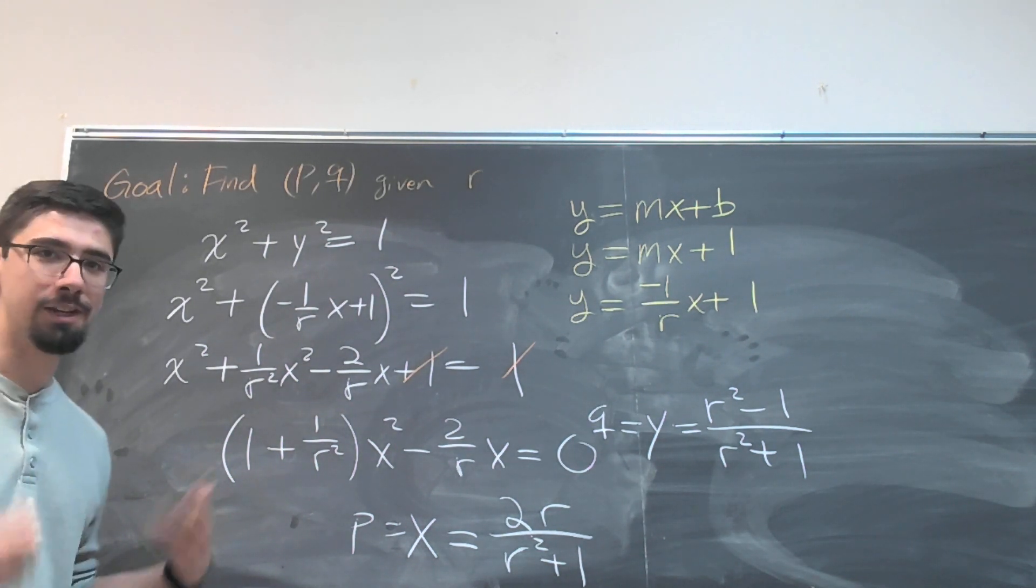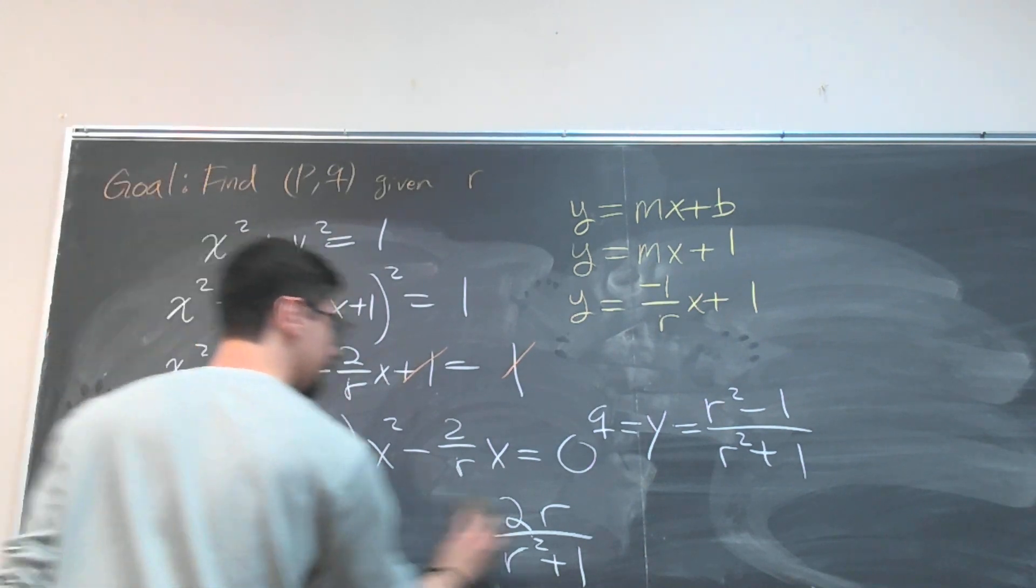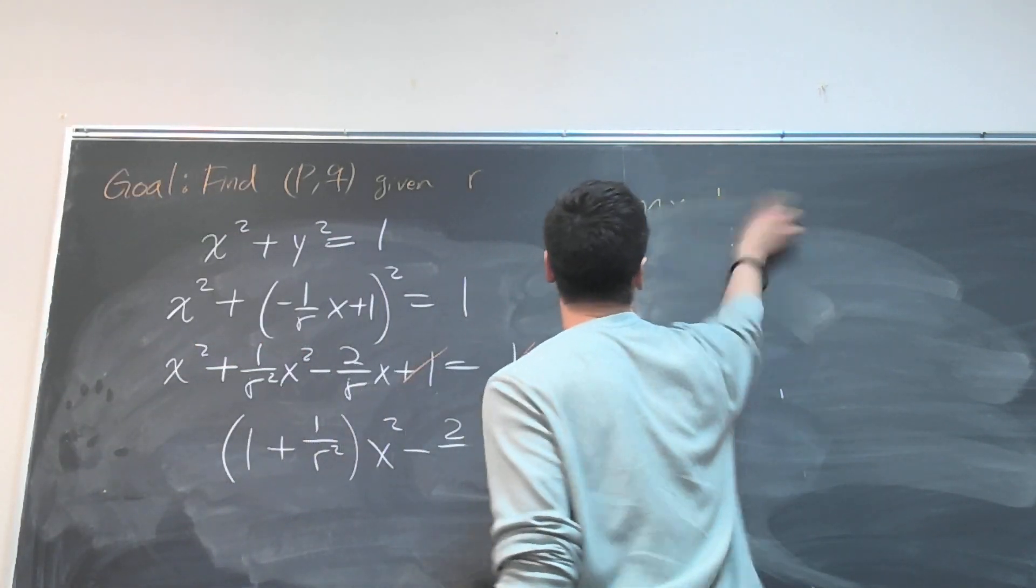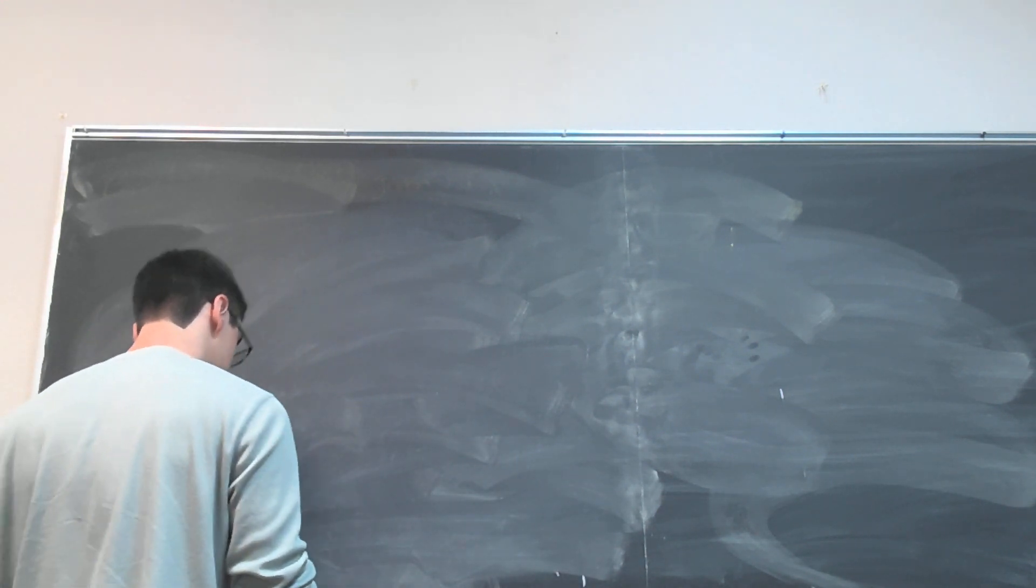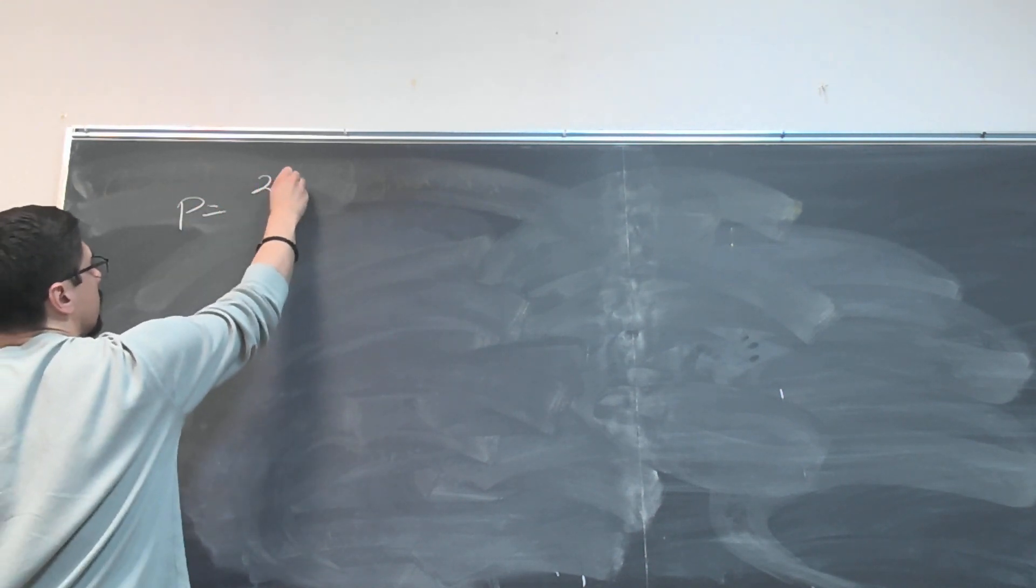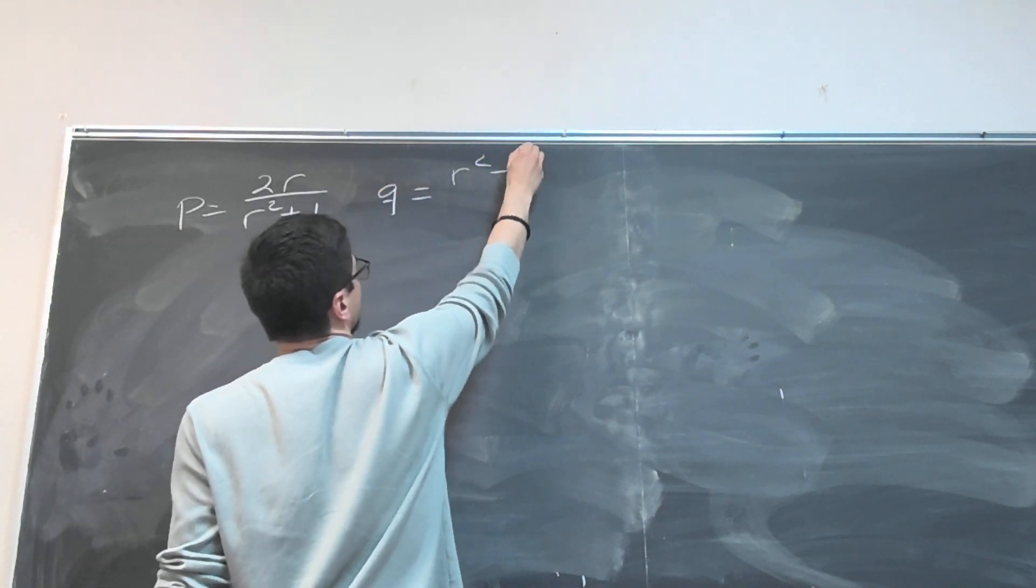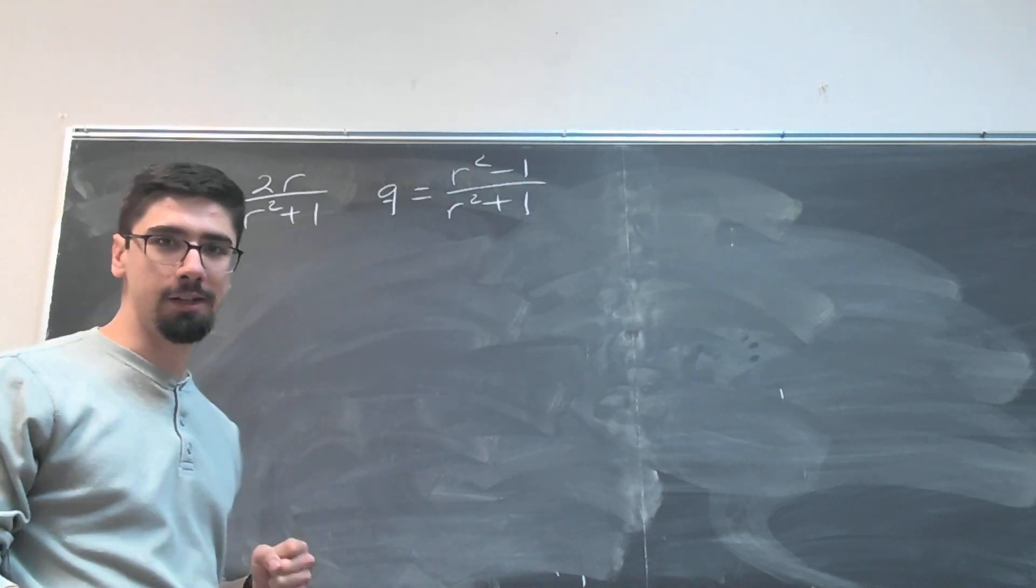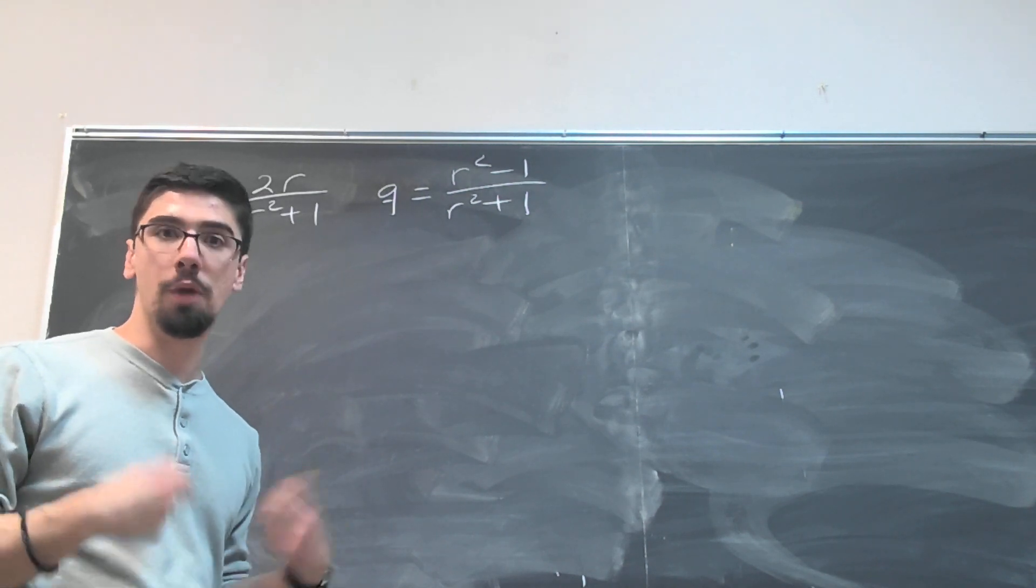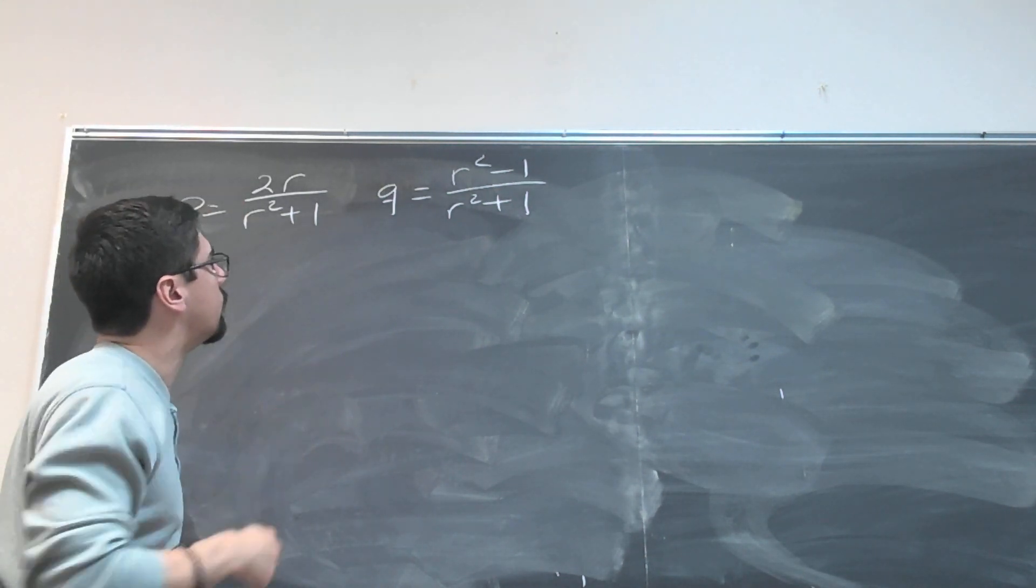Great. So now that we have these, let's go ahead and try an example to see how we can get some Pythagorean triples out of this. So we have that p is equal to 2r over (r² + 1), q is equal to (r² - 1) over (r² + 1). Since this is a birational function, all we have to do is plug a rational number into here and we'll get the numbers for the Pythagorean triples that we desire. So let's try the number 1 for instance, our favorite rational number.